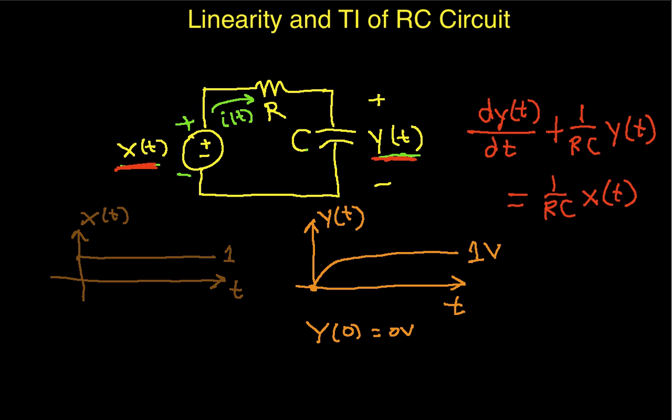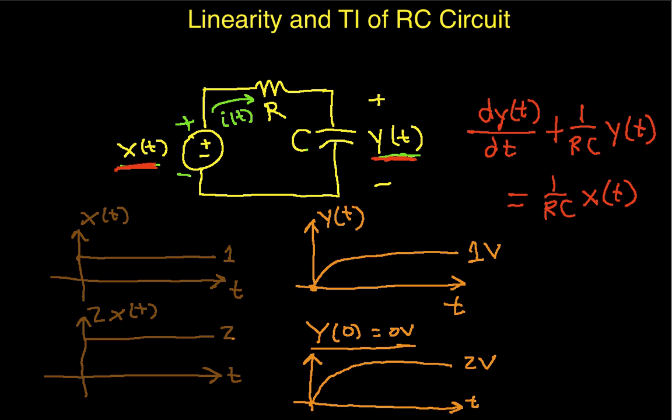If I take my input and multiply it by, say, a factor of 2, so this would be 2x(t), it's going to look like this. And my output in response to this input that's been made larger will look something like this where it goes up twice as far and asymptotically approaches 2 volts. So you can see that if I take my input and double it, that my output also doubles under the assumption that the initial condition here is 0 volts.